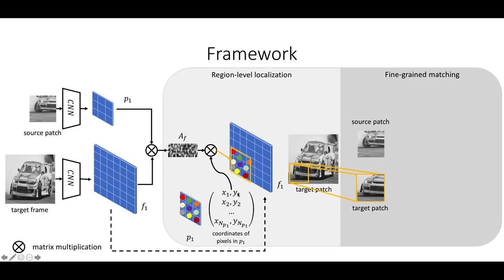Once we have the target patch, we put it together with the source patch and move on to the fine-grained matching. We basically want to propagate and warp the color information from the source patch to the target one in this stage, and compare it to the ground truth target as a self-supervised signal.